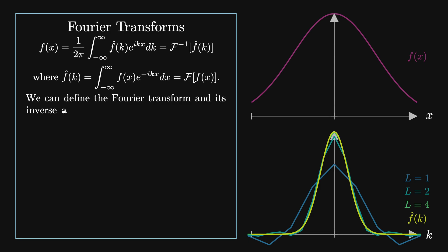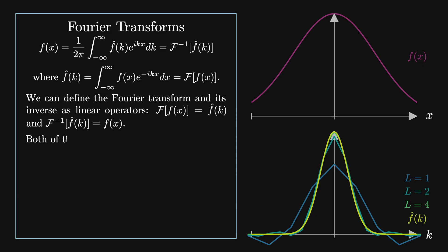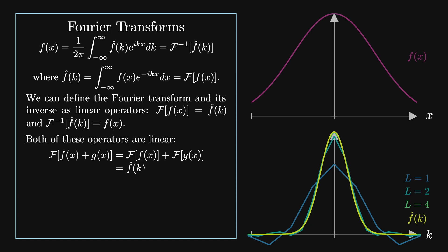We can define the Fourier transform and its inverse as linear operators: F of f of x equals f-hat of k, and F-inverse of f-hat of k equals f of x. Both of these operators are linear: F of f of x plus g of x equals f-hat of k plus g-hat of k, and F of a times f of x equals a times f-hat of k.